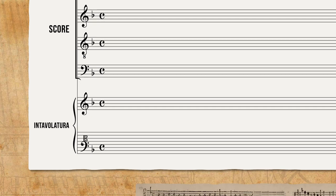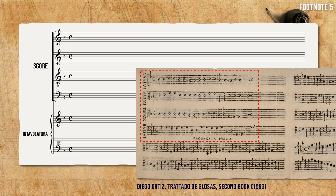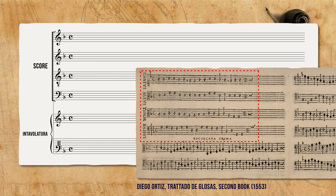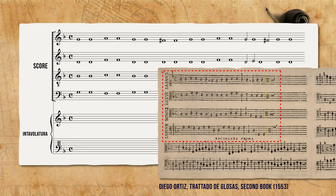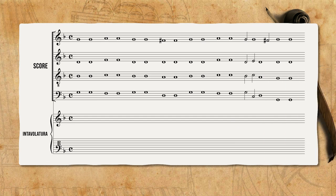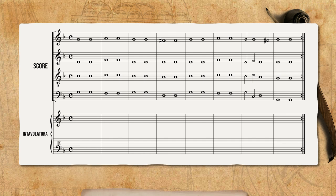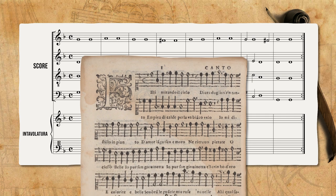For a start, we will intabulate a very simple four-part segment taken from Diego Ortiz's pieces for viola de gamba and harpsichord. We will copy his four-part harpsichord accompaniment onto our score, and following Di Ruta's instructions, we will divide it into measures of two semibreves. While adding bar lines is completely normal for us, in Di Ruta's time individual parts were normally without them.